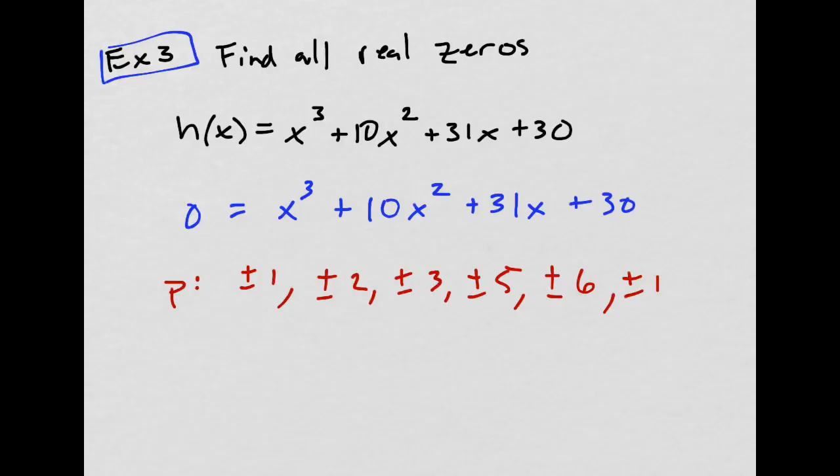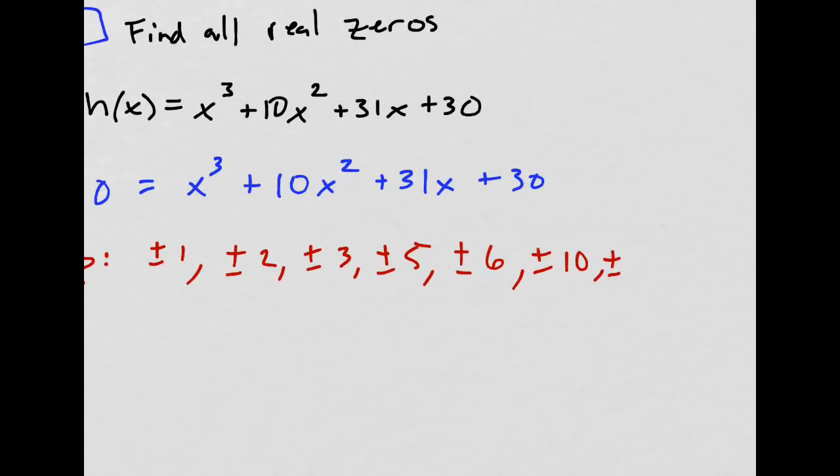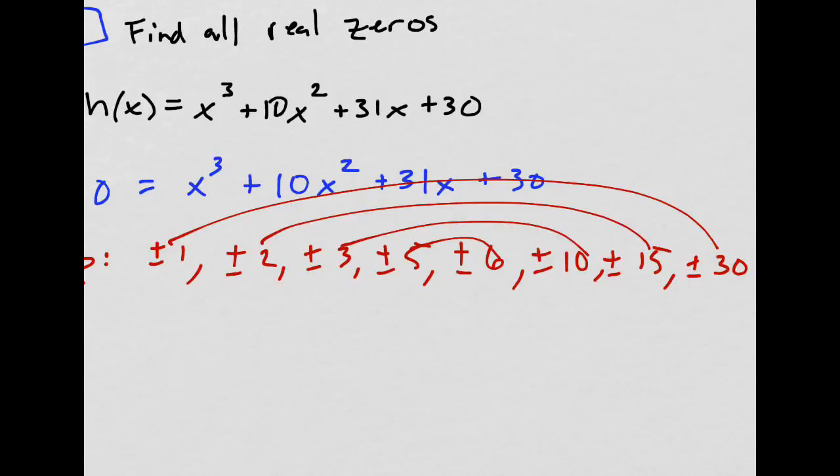Plus or minus 10, right 2 and 10, and then plus or minus 15, and then plus or minus 30, right, 1 times 30, 2 times 15, 3 times 10, 5 times 6. Yes, there we go, got them all.